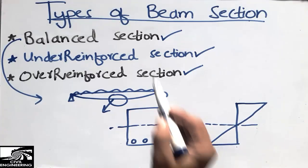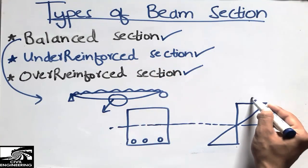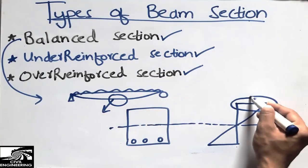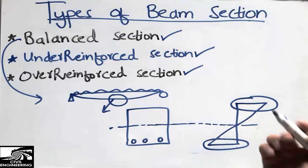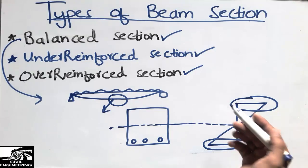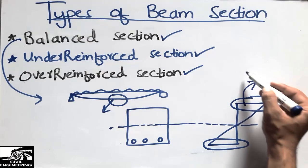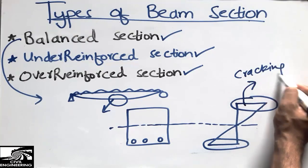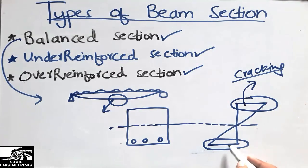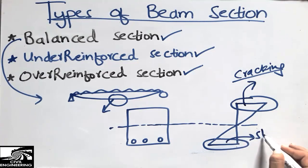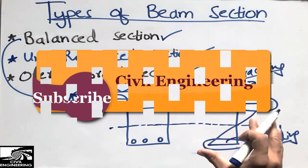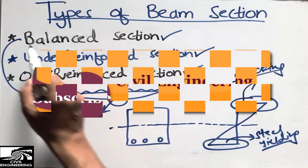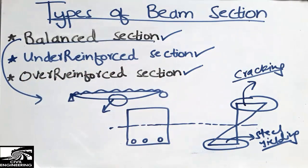In the balanced section, the compression strain and the tension yielding strain will occur at the same time. This means the cracking of the concrete at the top of the beam section and the steel yielding at the bottom of the beam section will occur simultaneously. This type of section is called the balanced section.